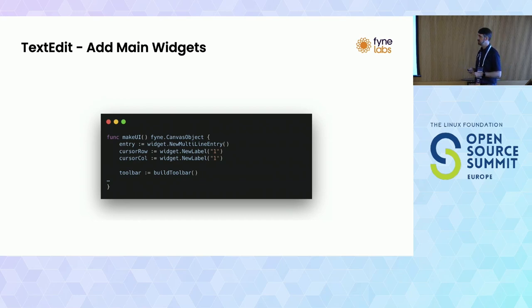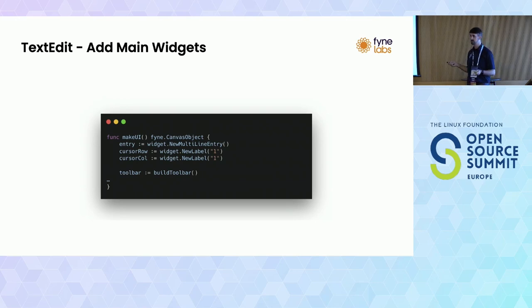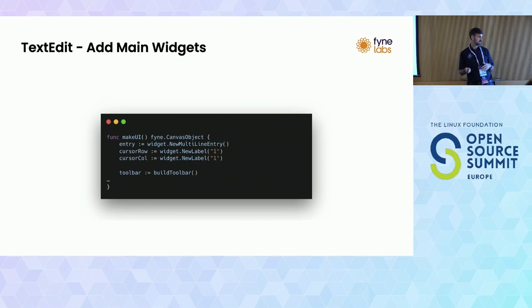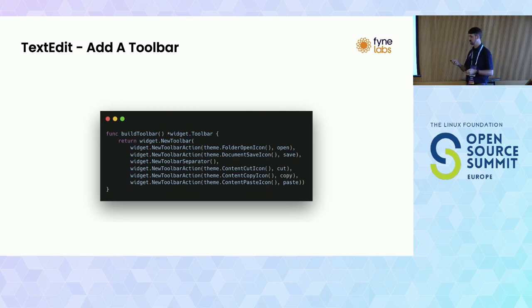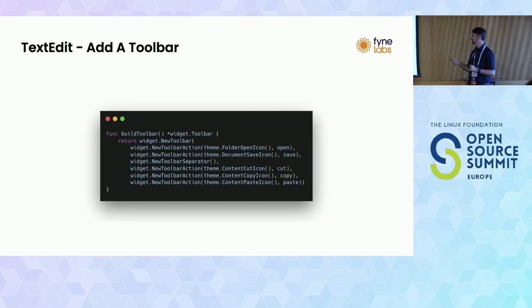Everything is a standard widget from the widget package. The main editing area is a new multi-line entry. For the status bar we create two labels for row and column, both defaulting to 1, and we'll add a toolbar as well. The build toolbar function simply returns a new toolbar where each item is an action with an icon and a function call. With Go we can pass the name of the function and it will be invoked when the toolbar button is pressed. We put a little separator in there too.